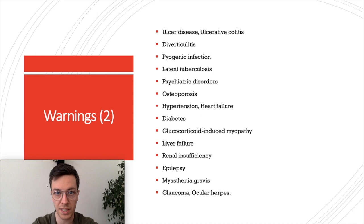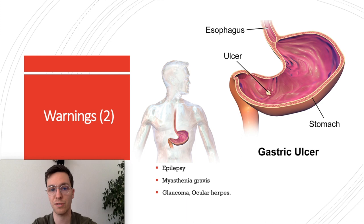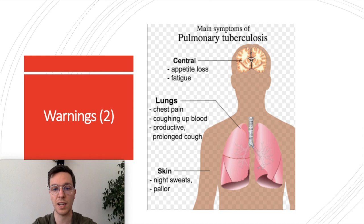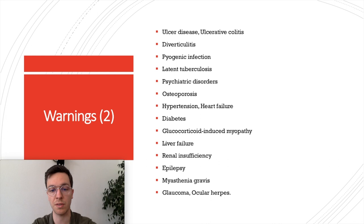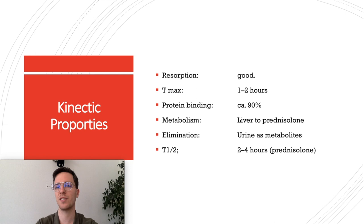Here are listed diseases where extra care is needed when combining them with prednisolone use. These include ulcerative colitis, ulcerative diseases, psychiatric disorders, latent tuberculosis, diverticulitis, diabetes, hypertension, heart failure, epilepsy, myasthenia gravis, glaucoma, and ocular herpes, among others. Feel free to pause the video to review all conditions listed.